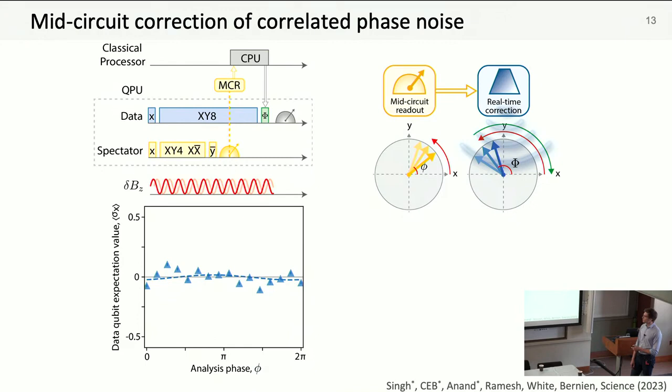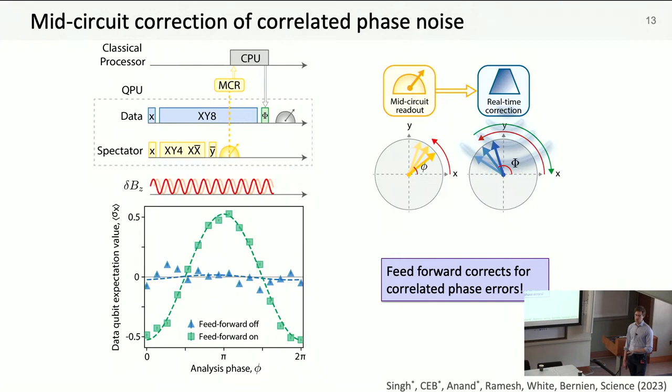We then add in the spectators. We synchronously decouple the spectator qubits for three quarters of the time, then perform mid-circuit measurement. This takes about 15 milliseconds. We process this in real time, it takes about a further eight milliseconds mainly in transferring data, and then we fire the correction pulse. When we do that, we can actually see the clear recovery of the coherent signal, showing us that feed forward allows us to correct for these correlated phase errors.